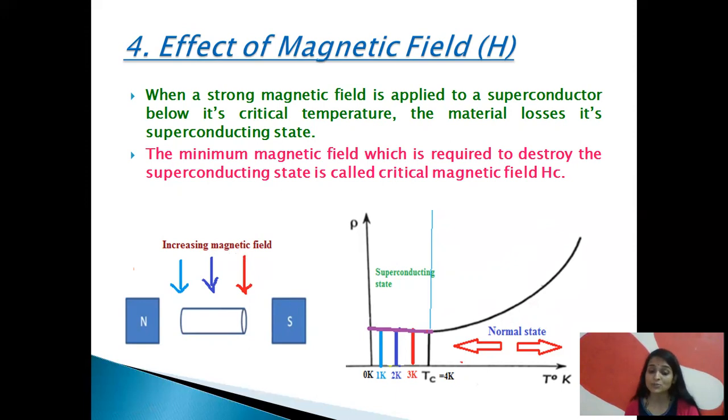When the temperature is decreased from 4 Kelvin to 3 Kelvin, the material again behaves like a superconductor.